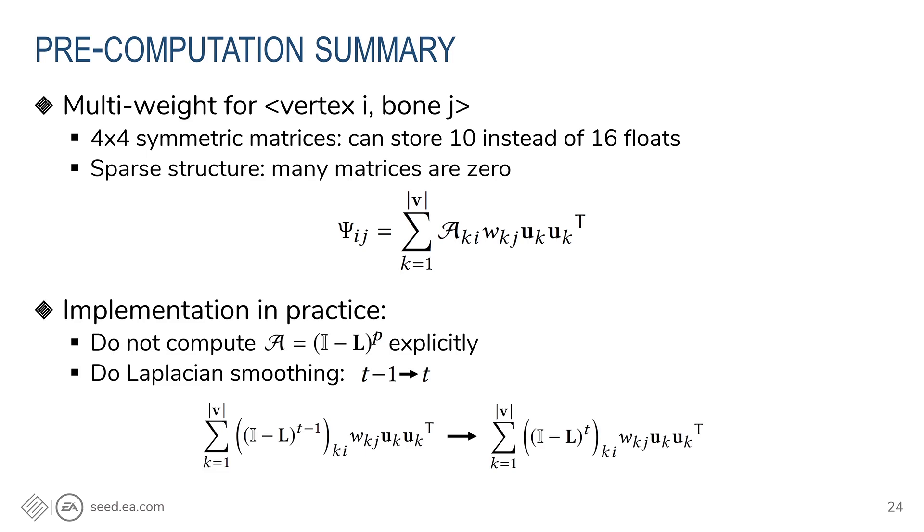And we also note that in practice, we don't need to compute the matrix A here explicitly. This is a square matrix with the size of number of vertices, and not so sparse, so computing it would be expensive. Instead, we do the Laplacian smoothing to raise the exponent of p one by one, which means we use the sine matrix at p at t minus one to compute the new sine matrix at p at t. This is equivalent to do Laplacian smoothing on these sine matrices with some matrix reshaping.